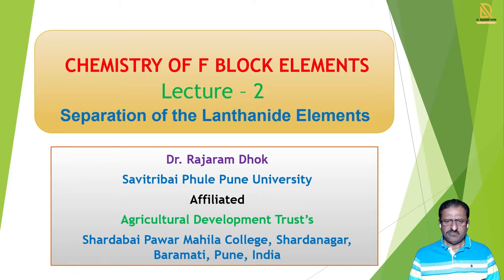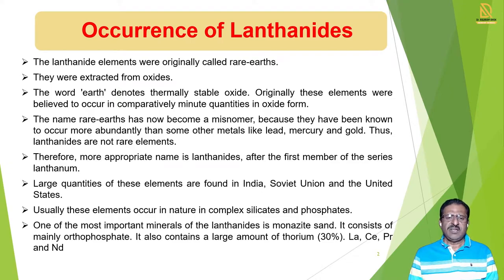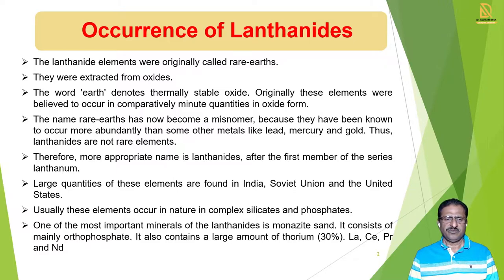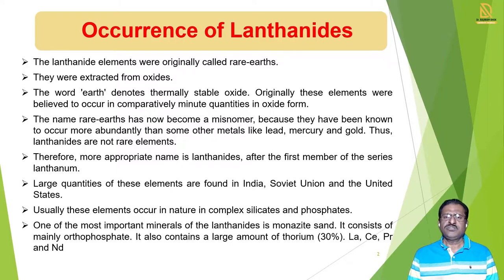Separation of the Lanthanide Elements. We have seen the different lanthanide elements and their electronic configuration. We see here the occurrence of these lanthanides in the Earth's crust. These lanthanide elements were originally called Rare Earths, meaning they are found in very small quantity in the Earth's crust. These elements are extracted from their oxides.